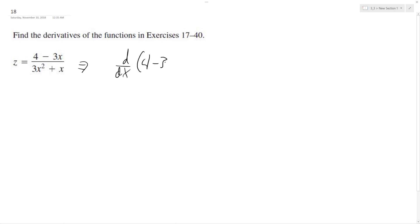So d dx of 4 minus 3x times 3x squared plus x minus 4 minus 3x times d dx of 3x squared plus x, all over quantity 3x squared plus x squared.